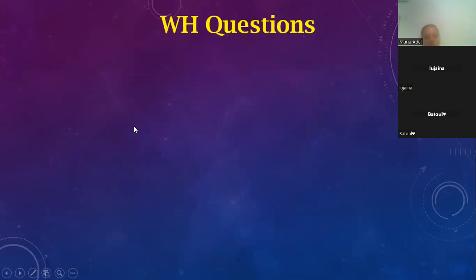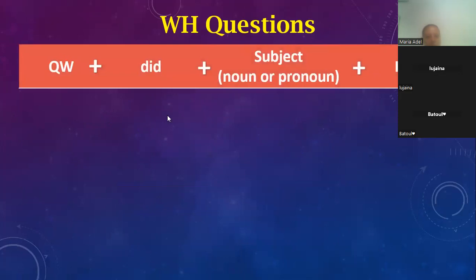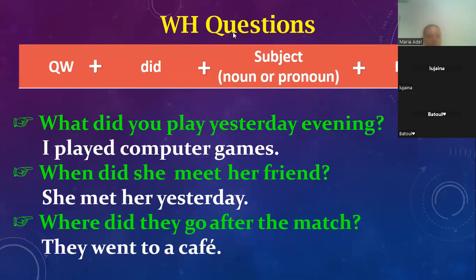The next question type is the WH question. It begins with a question word like what, where, when — then the auxiliary verb 'did', then the subject and infinitive. For example: 'What did you play yesterday evening?' To answer, we remove 'what' and 'did', and 'you' becomes 'I'.